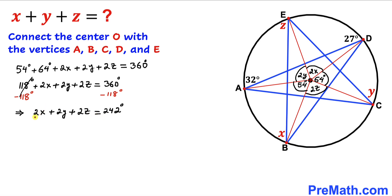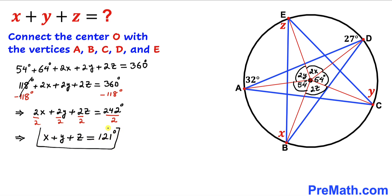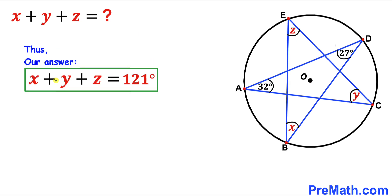We can see all these terms are divisible by 2, so let's divide each term by 2. Therefore we get x plus y plus z equals 121 degrees. That is our answer — the sum of the angles x plus y plus z turns out to be 121 degrees. Thanks for watching, and please don't forget to subscribe to my channel for more exciting videos.